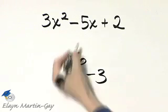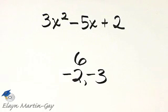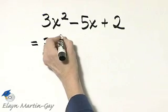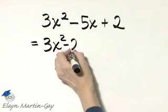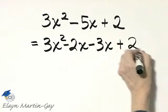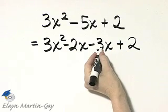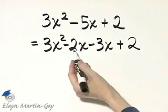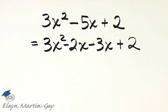Now I'll use these to rewrite that middle term. So remember negative 2 and negative 3. And I'll write this as 3x squared. I'll write that as minus 2x minus 3x plus 2. There's the negative 2 and the negative 3. I haven't changed anything because those two terms have a sum of negative 5x.